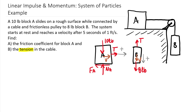To shorten computations, if I sum forces in the y-direction equal to zero for block A, I find that NA equals 10 pounds. The normal force is not always equal to the weight, but in this case all remaining forces are horizontal, so we can quickly establish that and save one additional equation.